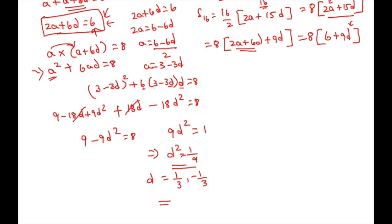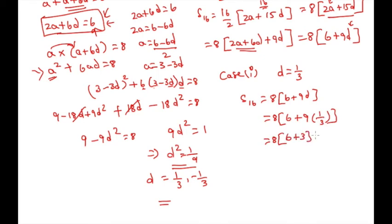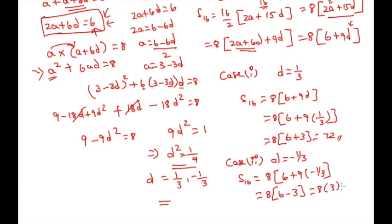We got 2 values of d, so how to proceed once you have 2 values? We will write case 1 for d equal to 1 by 3. S16 is equal to 8 into 6 plus 9d, which is 8 into 6 plus 9 into 1 by 3, which is 72. Using case 2, we get d equal to minus 1 by 3. S16 is equal to 8 into 6 minus 3, which is 8 into 3, which is 24. So S16 has 2 values: 72 and 24.